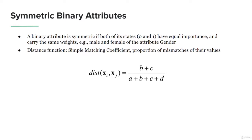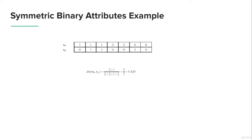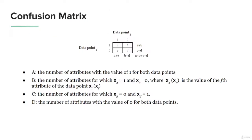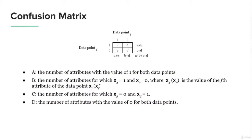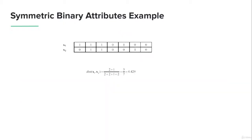Let's look at an example with features x1 and x2 containing 1s and 0s. The formula requires b (x1=1, x2=0): counting gives 2 instances. The c value (x1=0, x2=1): only 1 instance. So b plus c equals 3. For a (both are 1) and d (both are 0), we find two 1,1 pairs and two 0,0 pairs. This is how we calculate the simple matching coefficient for symmetric binary attributes.